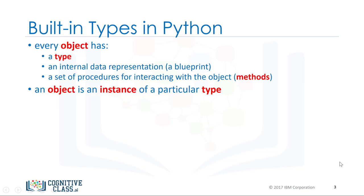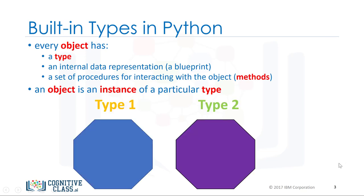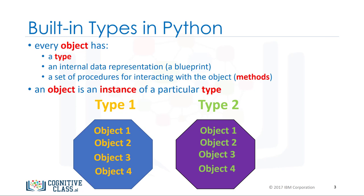For example, we have two types: type 1 and type 2. We can have several objects of type 1, as shown in yellow — each object is an instance of type 1. We also have several objects of type 2, shown in green — each object is an instance of type 2.